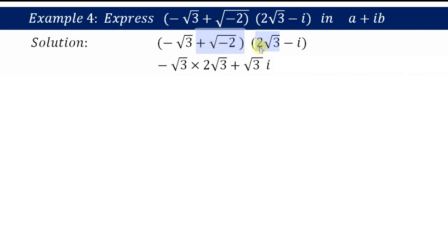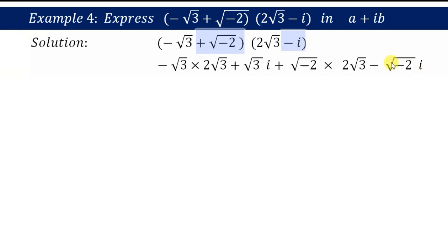Next, √(-2) multiplied by 2√3, then √(-2) multiplied by -i. Positive times negative gives a negative sign, so we have -√(-2)·i. The number outside the root is 2, and the numbers inside multiply: 3 times 3 gives root 9.